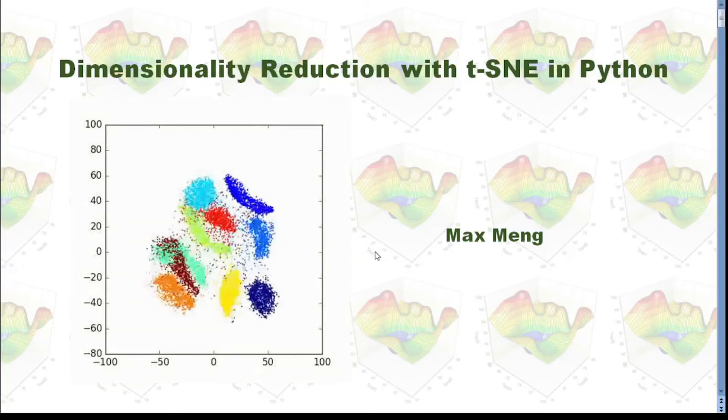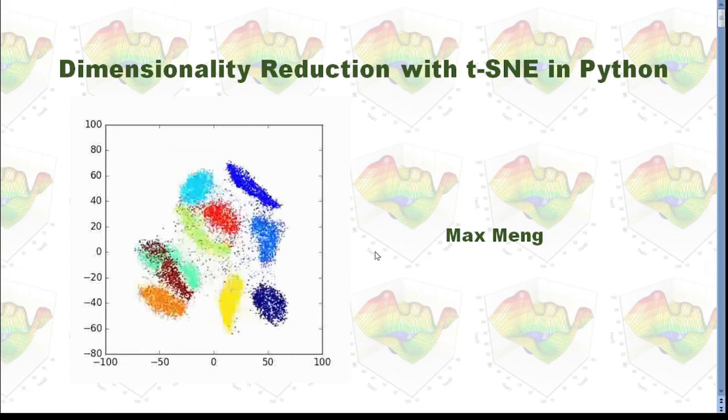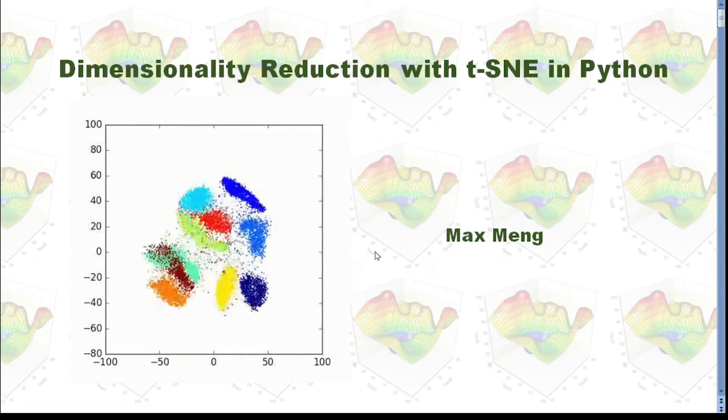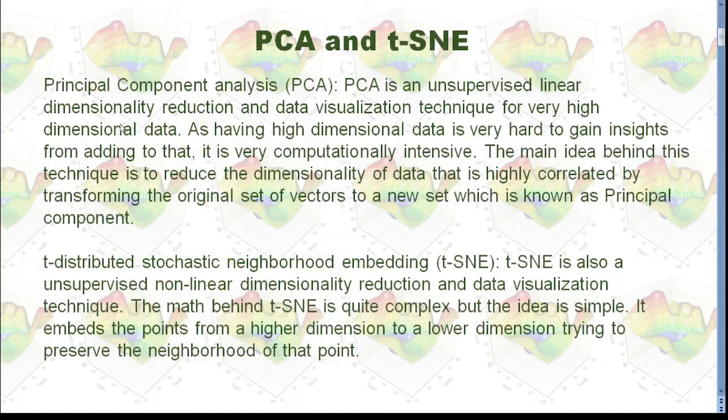This time I'm going to talk about dimensionality reduction with t-SNE in Python. There are many dimensionality reduction techniques. Principal component analysis or PCA is unsupervised linear dimensionality reduction and data visualization technique for very high dimensional data. T-distributed stochastic neighborhood embedding or t-SNE is also unsupervised nonlinear dimensionality reduction and data visualization technique.